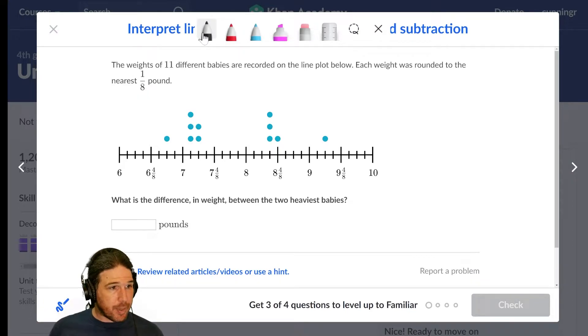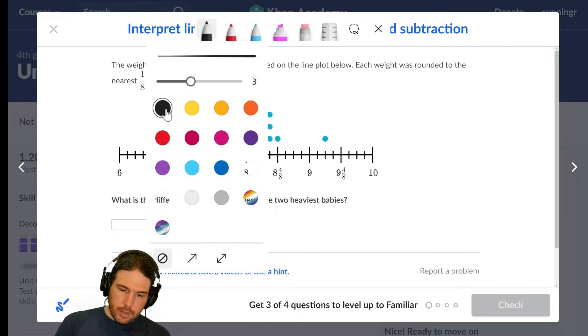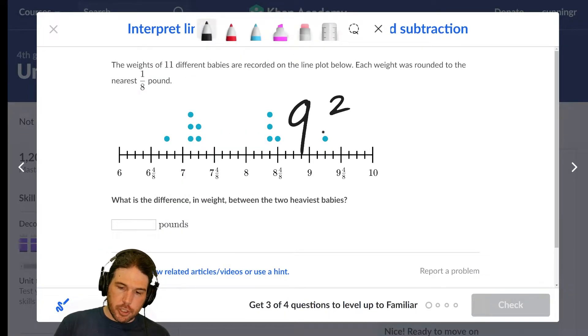So the heaviest baby, let's see, each of these is one, two, three, four. This is four eighths. So each of these little tick marks is one eighth. So this one, the heaviest baby, the one that's furthest off to the right, is nine and one eighth, two eighths. Nine and two eighths.